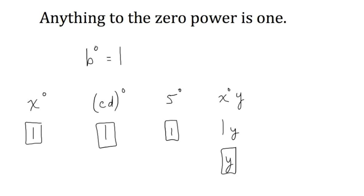Now, there is one exception to this rule. The only thing that b cannot equal here is 0. In other words, 0 to the 0 power is undefined.